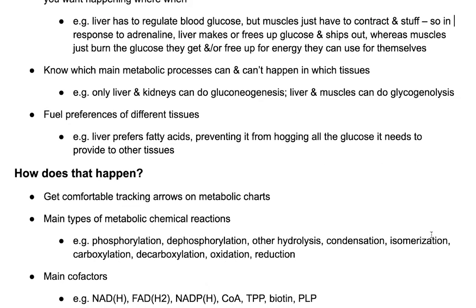This brings you to knowing which main metabolic processes can and can't happen in which tissues. For example, only your liver and kidneys can do gluconeogenesis. But as we just talked about, the liver and the muscles can both do glycogenolysis — they can both break down glycogen. Also, your red blood cells, your erythrocytes, don't even have mitochondria.